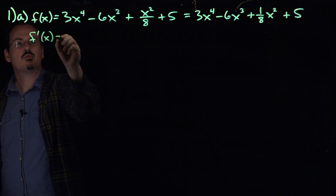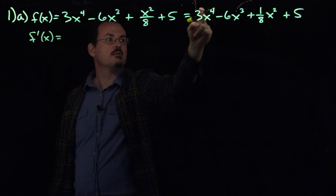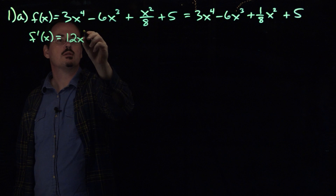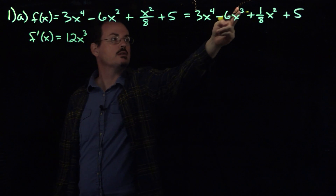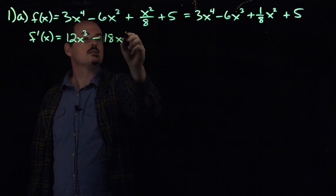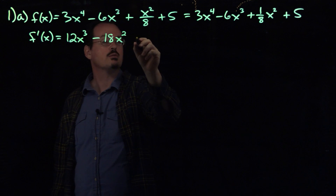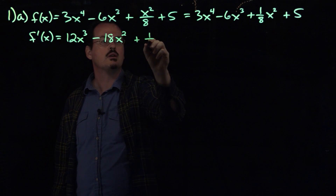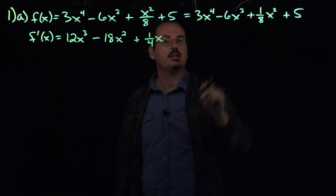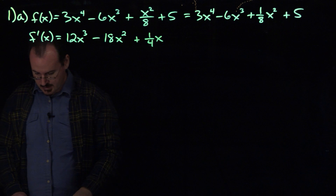So then we can take the derivative of this using the power rule. Take the power, multiply it by the 3, so we're going to get 12x to the third power. For the next one, bring the 3 down and multiply it by the 6, so we get minus 18x to the second power. Then 2 times 1/8 is going to be 1/4, so we'll get 1/4 x to the first power. And then the derivative of any constant is 0, so that term is just gone.